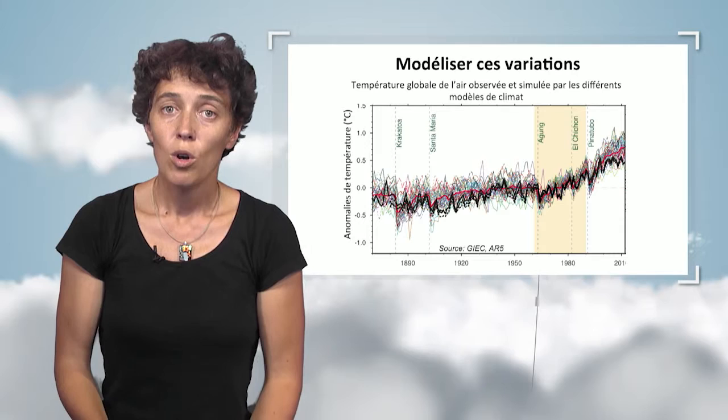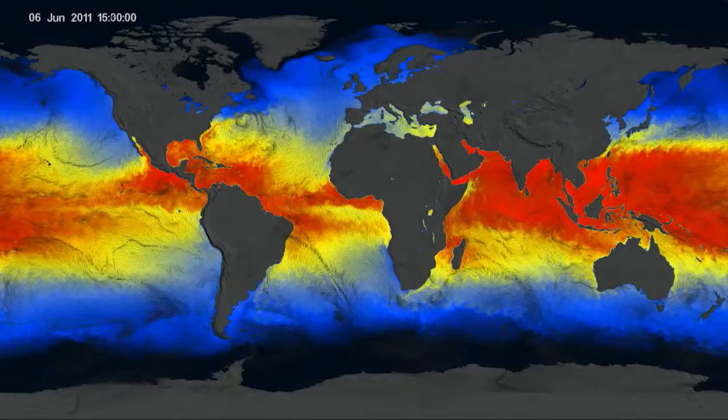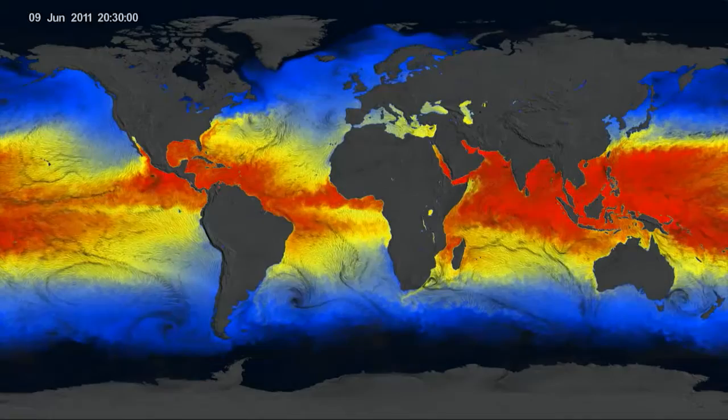Why is the climatic system so variable? The climatic system is a complex system. It is constantly in motion, fueled by solar energy, and there are several processes at play with different time and space scales, with numerous interactions between the various components.